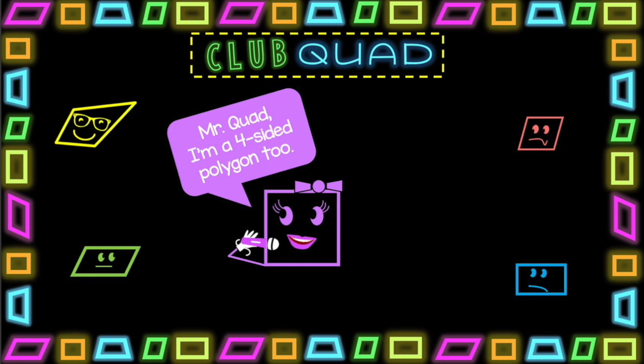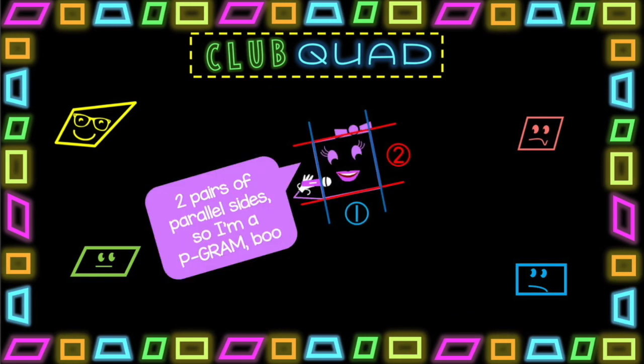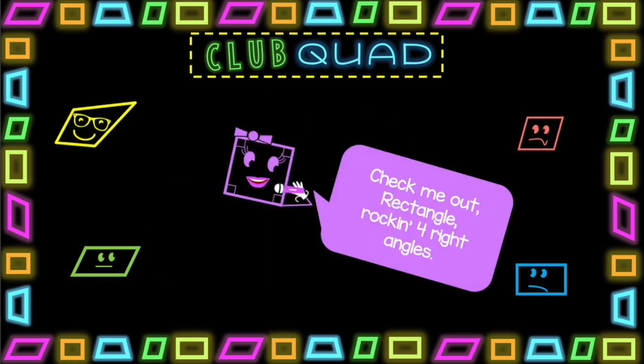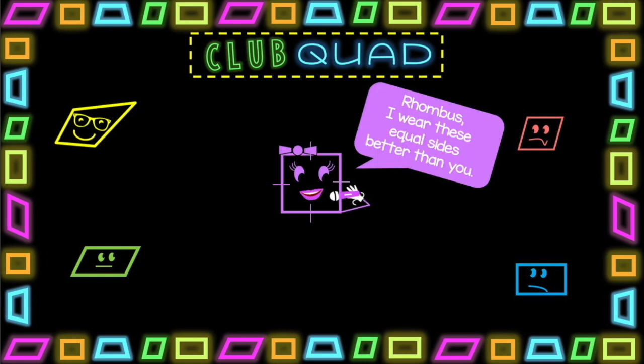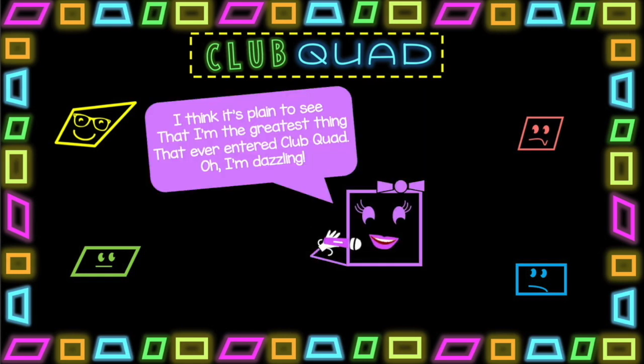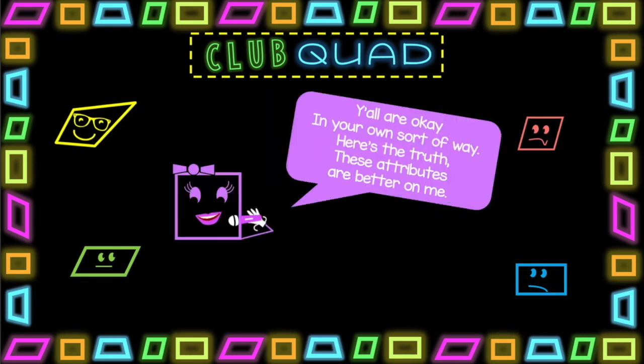Mr. Quad, I'm a four-sided polygon too. Two pairs of parallel sides, so I'm a p-gram boom. Check me out, rectangle rocking four right angles. Rhombus, I wear these equal sides better than you. I think it's plain to see that I'm the greatest thing that ever entered club quad. Oh, I'm dazzling. Y'all are okay in your own sort of way. Here's the truth. These attributes are better on me.